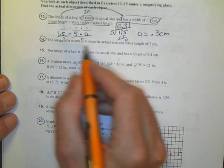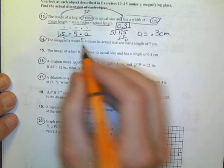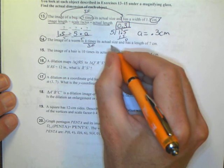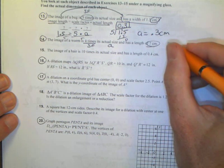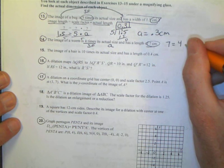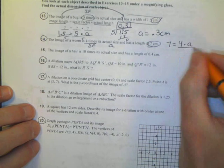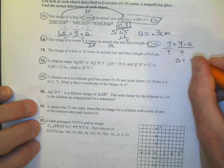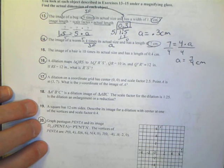When I look at number 14, it's the same type of deal. I'll take my image length equal the scale factor times the actual length. The image of the worm is 4 times, that's my scale factor, its actual size I don't know, and has a length of 7 centimeters. So once again, I'll do 7 set equal to my scale factor times the actual size. When I solve that, divide both sides by 4, A equals 7/4. And I'm looking at centimeters, so I can write centimeters.